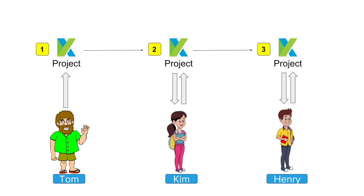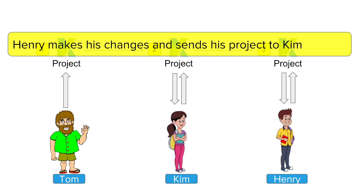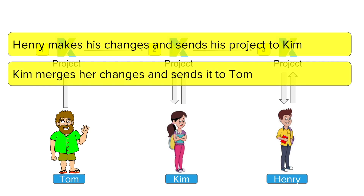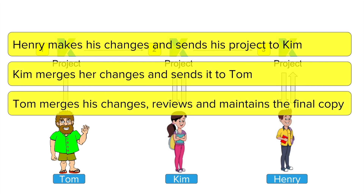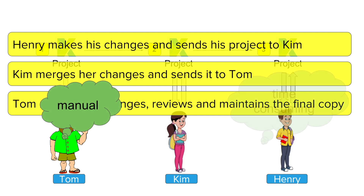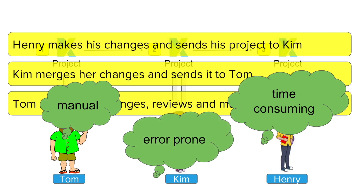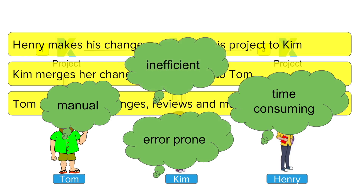One option is Henry makes his changes and sends the project to Kim, who merges her changes and sends the final project to Tom. Tom then merges his changes, reviews all the changes, and maintains the final copy and distributes it to all team members. Now this is a very manual approach — it's time consuming, error prone, and highly inefficient.